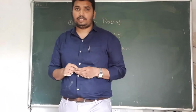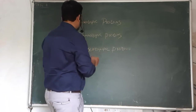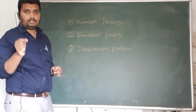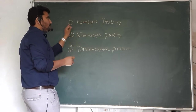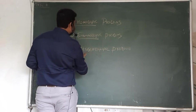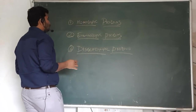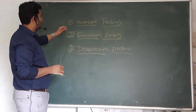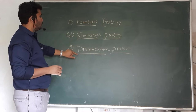Structure determination of organic compounds involves not only elucidation of structure but also the stereochemistry of that structure. This topic focuses on how NMR and stereochemistry are connected. We will start with homotopic protons, enantiotopic protons, and diastereotopic protons.